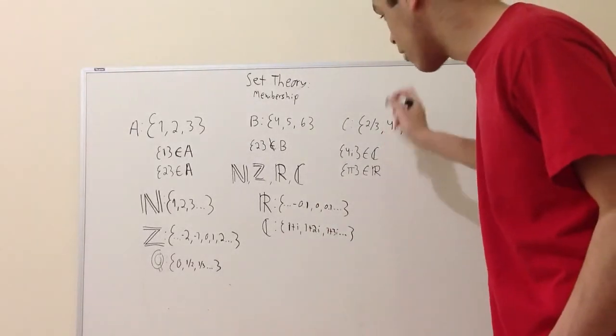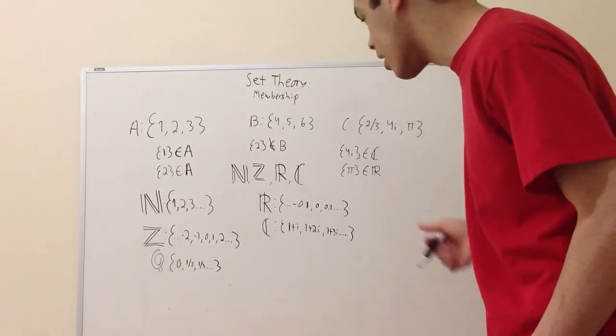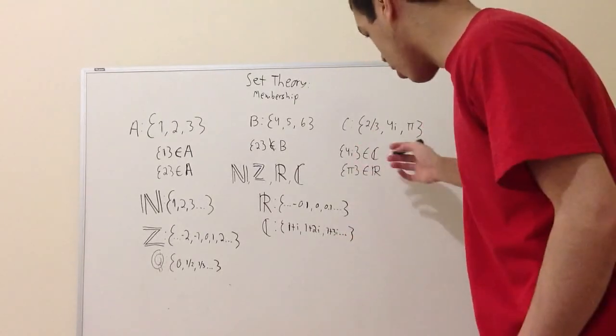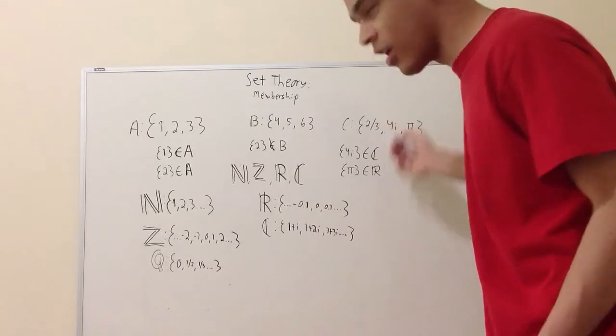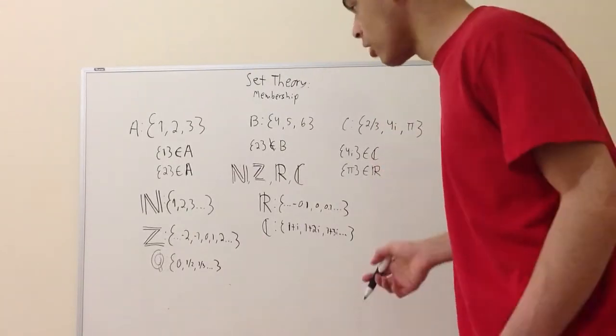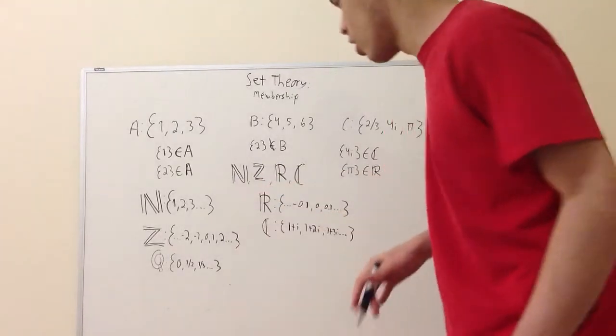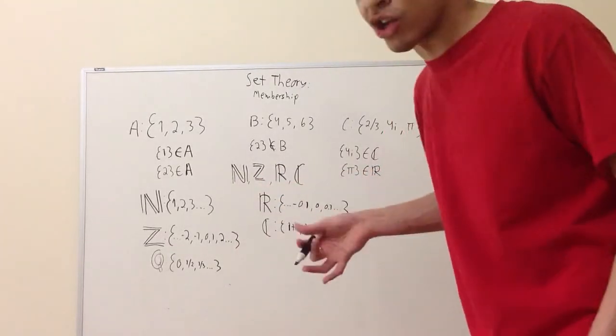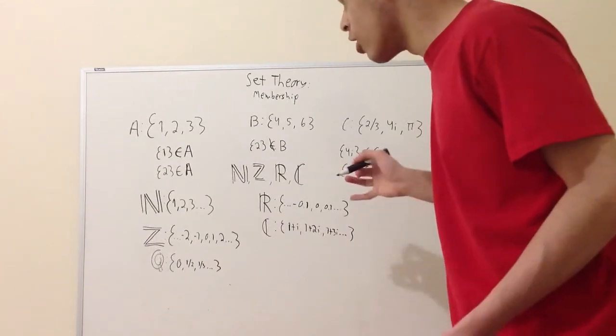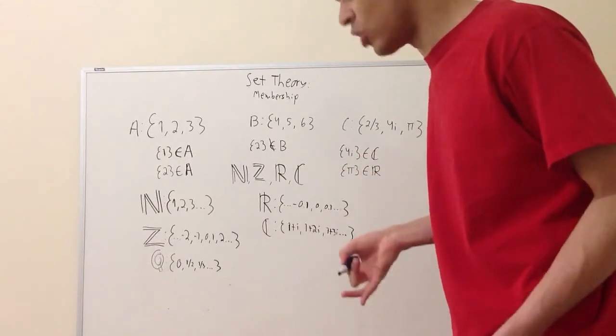Over here for set C, we have two-thirds, four i, and pi. Four i is actually a member of the complex set, so I just wrote the fancy C, which is for complex numbers. And of course, pi is a real number. It's not a natural, it's not a rational. So that pretty much are just some examples of what set membership is all about.